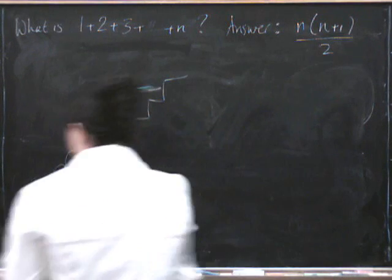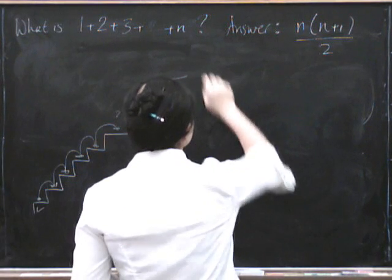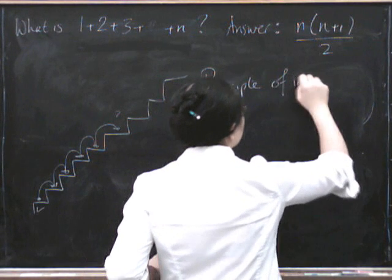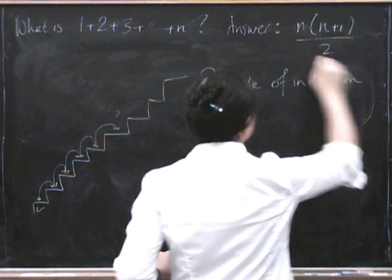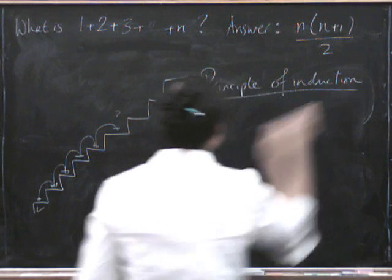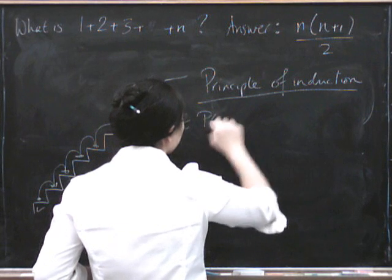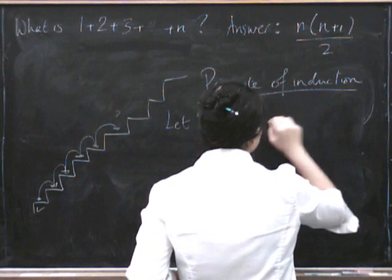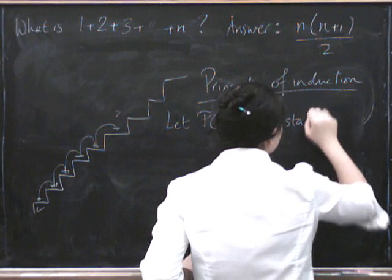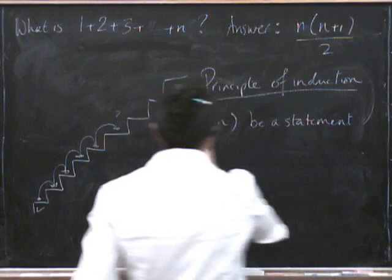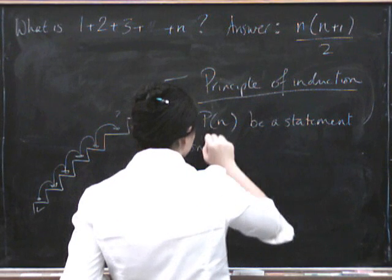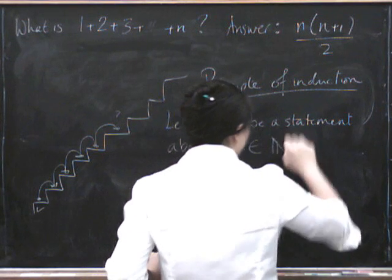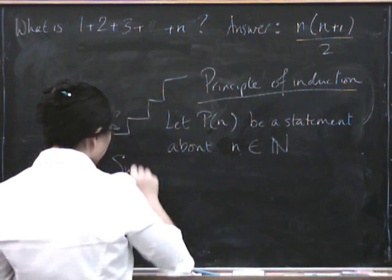The principle of induction says: let P of n be some statement about natural numbers. It must be a statement about the natural number n. And I'm going to suppose two things.